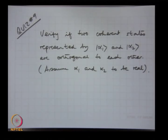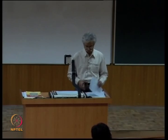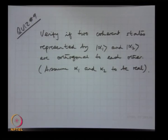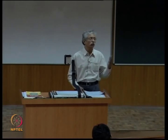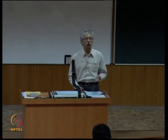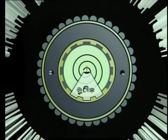For the quiz: verify whether two coherent states represented by |α1⟩ and |α2⟩ are orthogonal to each other. Recall that two Fock states |n=1⟩ and |n=2⟩ are orthogonal. Are coherent states |α1⟩ and |α2⟩ similarly orthogonal?